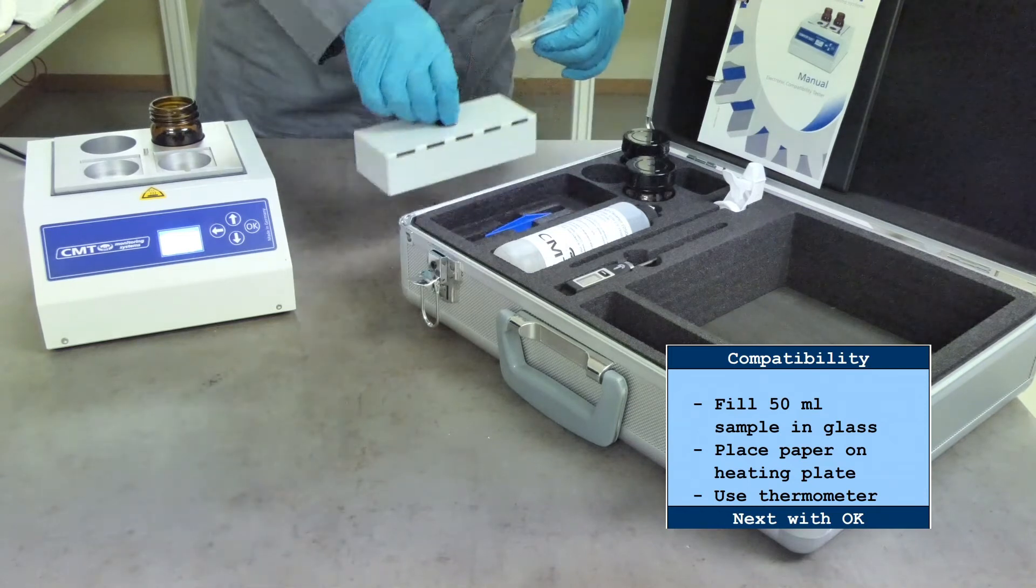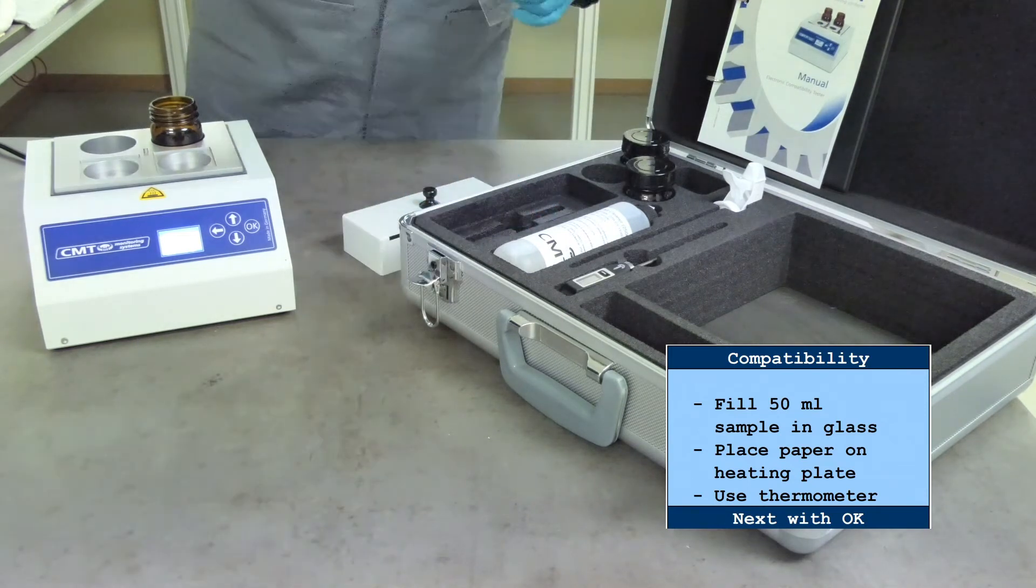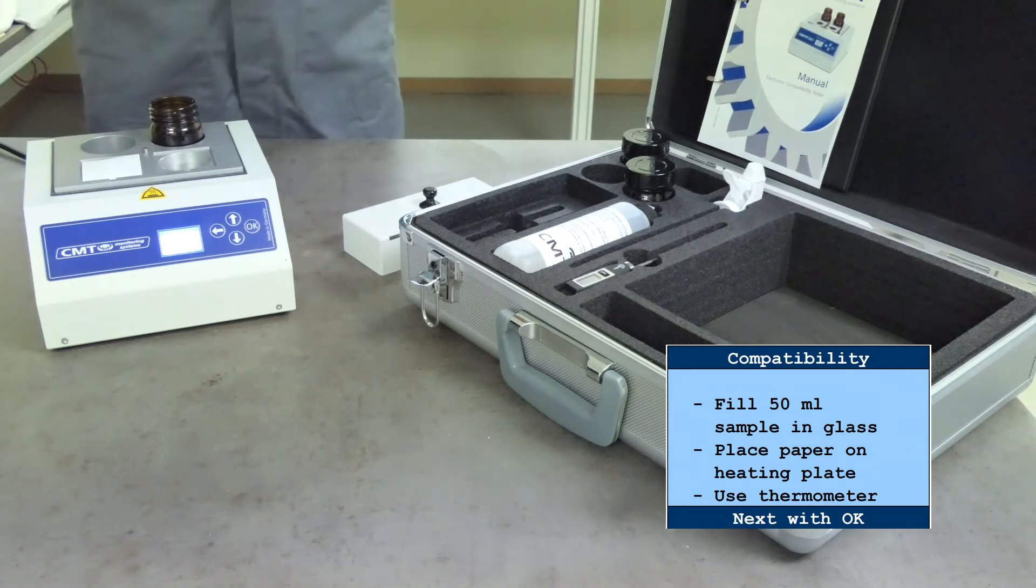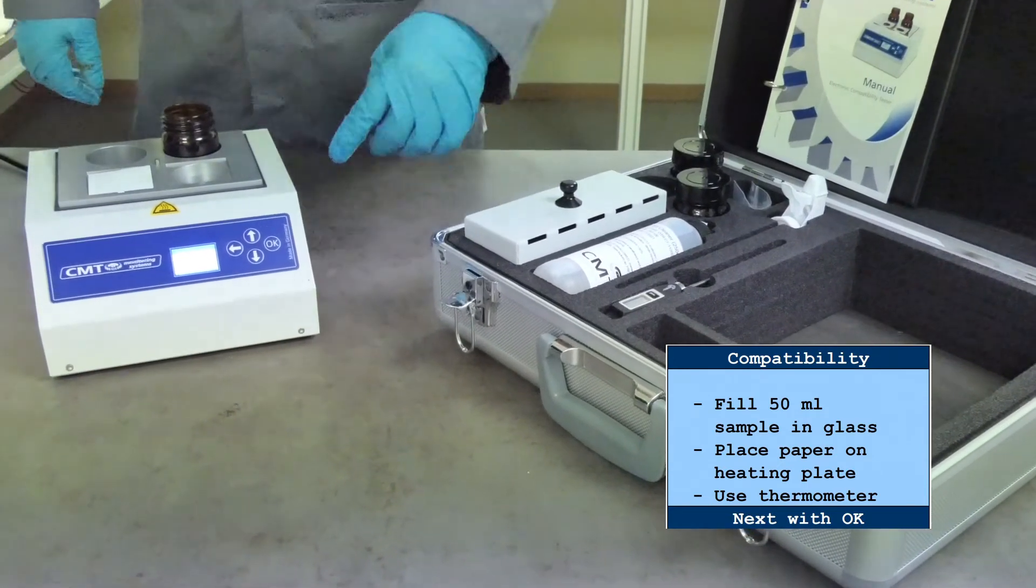Put a test paper in the square hollow of the heating plate, allowing it to heat up to the heating plate temperature. Press OK to start heating the sample.